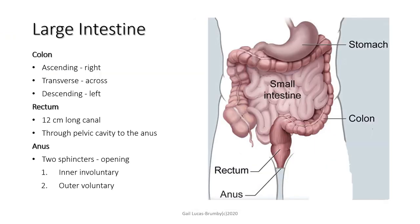The colon is divided into three sections: the ascending colon on your right, the transverse colon going across the middle, and the descending colon on your left. The rectum comes at the end of the descending colon, is 12 centimetres long, and passes through the pelvic cavity to the anus. The anus has two sphincters: the inner involuntary sphincter and the outer voluntary sphincter. When we get the urge to evacuate our bowel, the inner involuntary sphincter opens, allowing us to relax and open the outer voluntary sphincter.